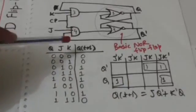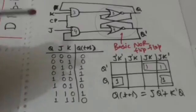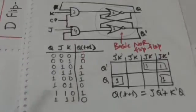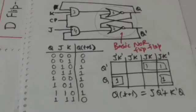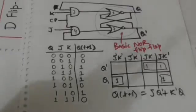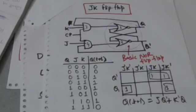When Q equals 0 and J and K are also equal to 0, then on the occurrence of clock pulse the next state will be 0. When Q equals 0, J equals 0 and K equals 1, the next state will also be 0. When Q equals 1 and J and K are both 0, the next state will be 1. And when Q equals 1 and J and K are both equal to 1, the next state will be 0.